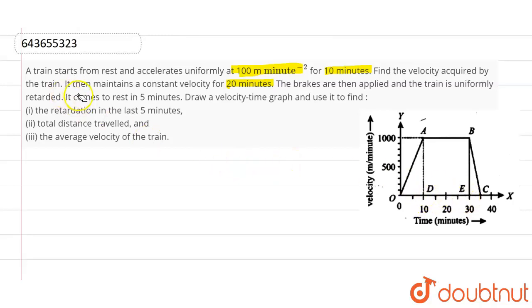So it will reach at a point from O to D in 10 minutes. And from D to E, it maintains a constant velocity for 20 minutes. Then the brakes are applied, the train is retarded, and it comes to rest in 5 minutes. That's why there is 5, means 35 total.